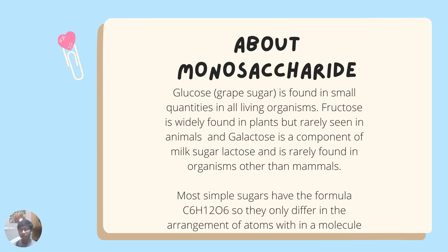Let's talk about monosaccharides in detail. Glucose, also known as grape sugar, is found in small quantities in all living organisms. Fructose is widely found in plants but rarely seen in animals. Galactose is a component of the milk sugar lactose and is rarely found in organisms other than mammals. Most simple sugars have the formula C₆H₁₂O₆, and they differ in the arrangement of atoms within a molecule, which leads to different physical and chemical properties.